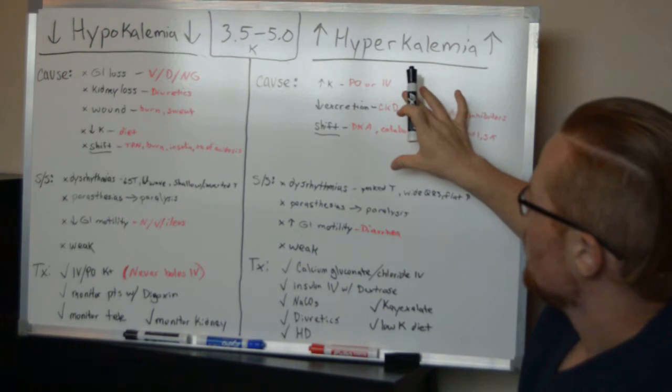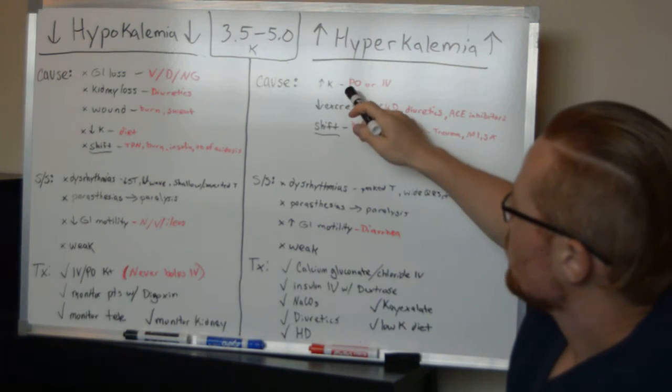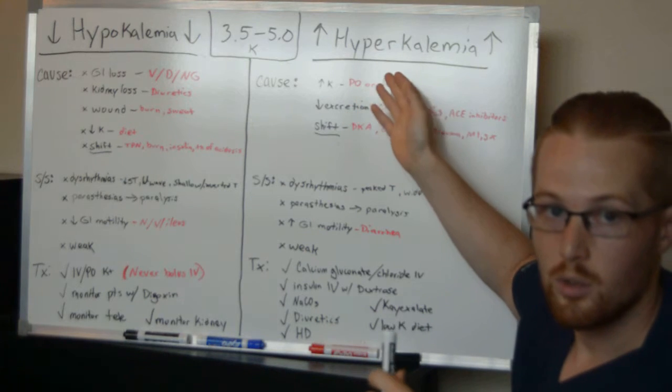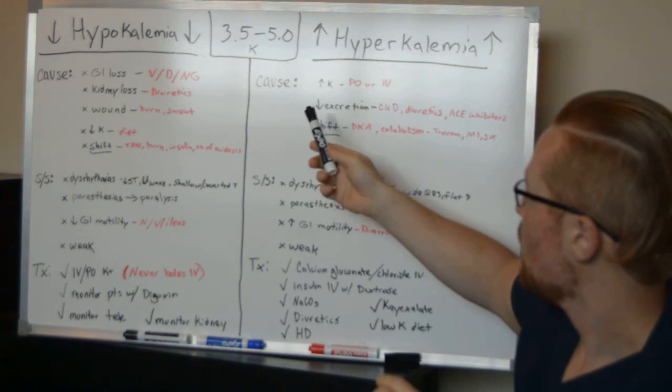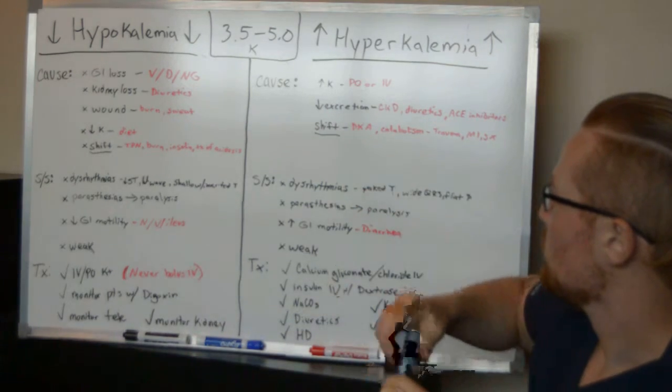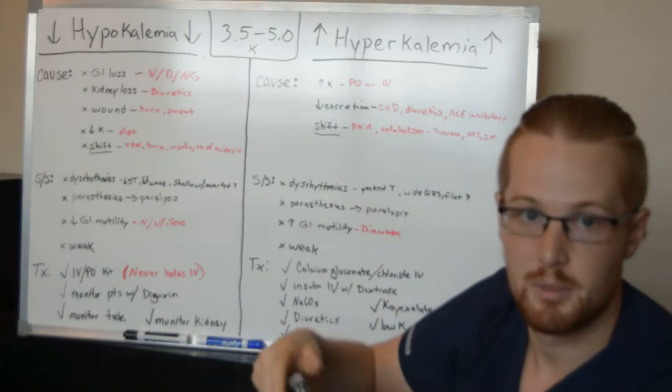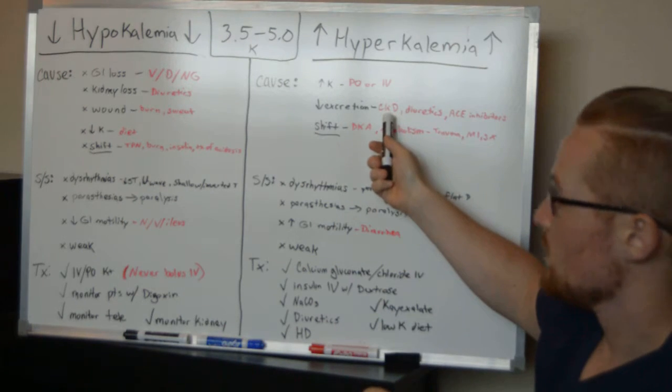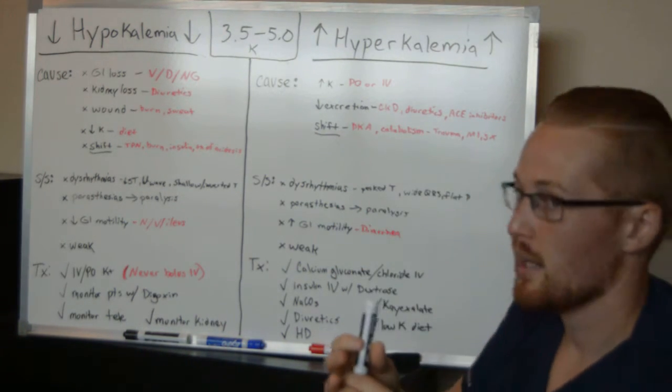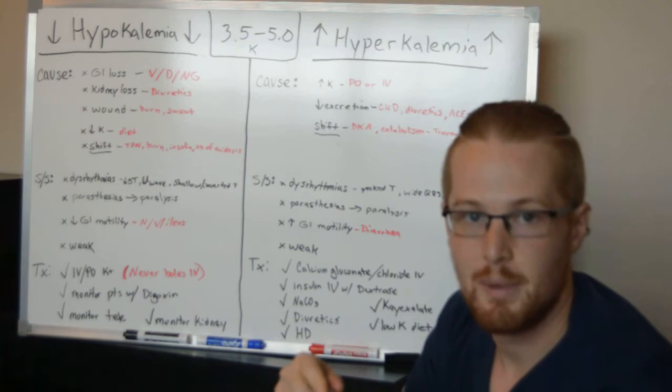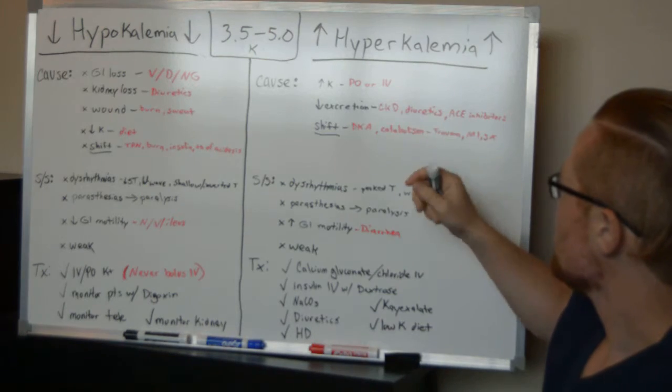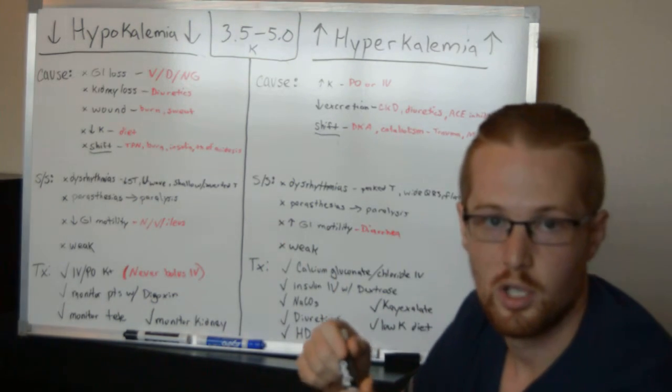Now, hyperkalemia is caused by increased amounts of potassium entering the patient, whether this is through diet or through IV therapy. It can be caused by decreased excretion of potassium. So the patient is supposed to be able to get rid of excess potassium, but they can't because their kidneys don't work with chronic kidney disease. It could be because they're taking diuretics known as potassium sparing diuretics that will hold on to potassium. And ACE inhibitors can also cause the patient to hold on to potassium.